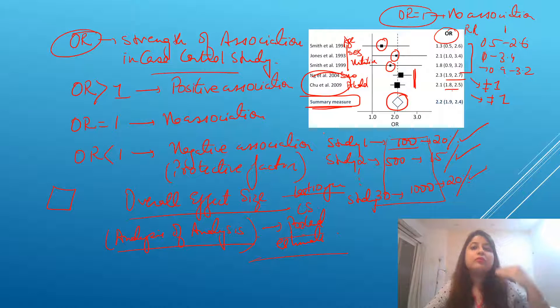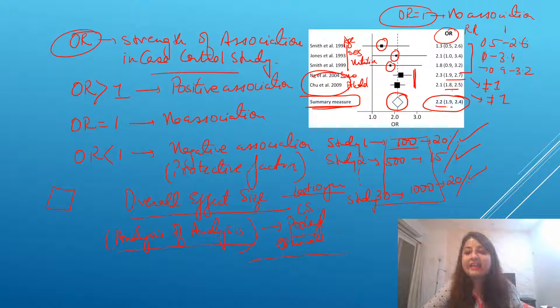So if somebody goes one step further and asks you from this particular graph, comment on the overall effect size or pooled estimate, what are you going to write? This particular value. And is this significant or not? Is this pooled estimate size significant or not?